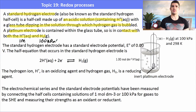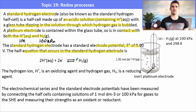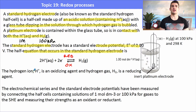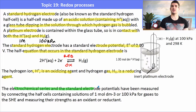The solution must be at 1 mol dm⁻³ and the hydrogen gas pressure at 100 kPa, at 298 K. The E° value of the SHE has been defined as zero. This means H⁺ ions undergoing reduction form H₂ gas, and H₂ gas undergoing oxidation forms H⁺. H⁺ is the oxidizing agent and H₂ is the reducing agent. The electrochemical series was measured by connecting half cells at standard conditions to the SHE and measuring their strengths as oxidants or reductants.